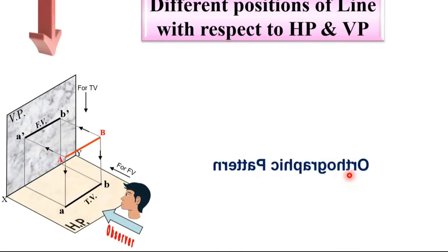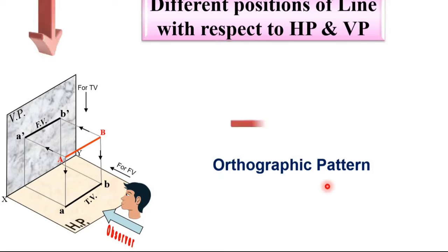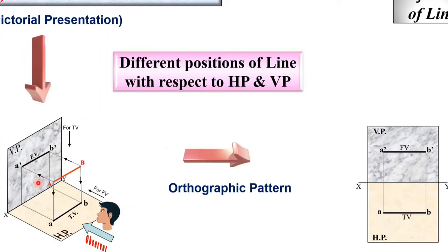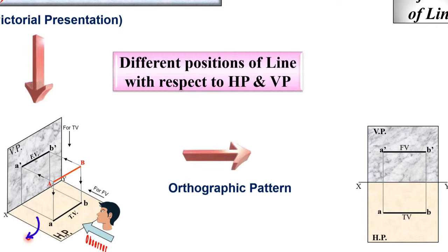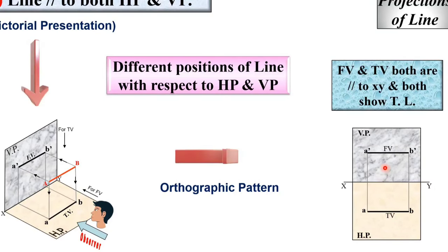Now for the orthographic pattern: A dash B dash is above the XY line, and the horizontal plane rotates 90 degrees clockwise so AB moves below the XY line. In this case, both the front view and top view are parallel to the XY line, so both represent the true length of AB.